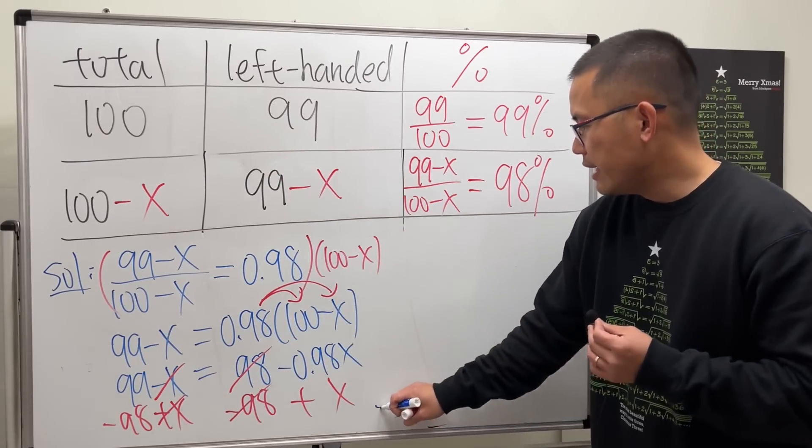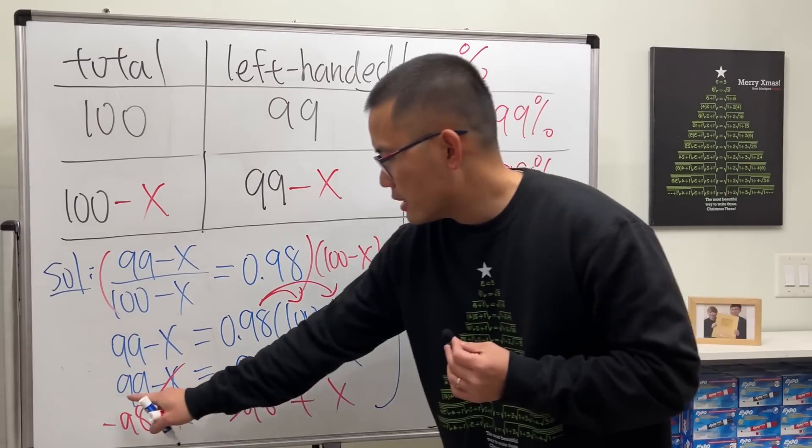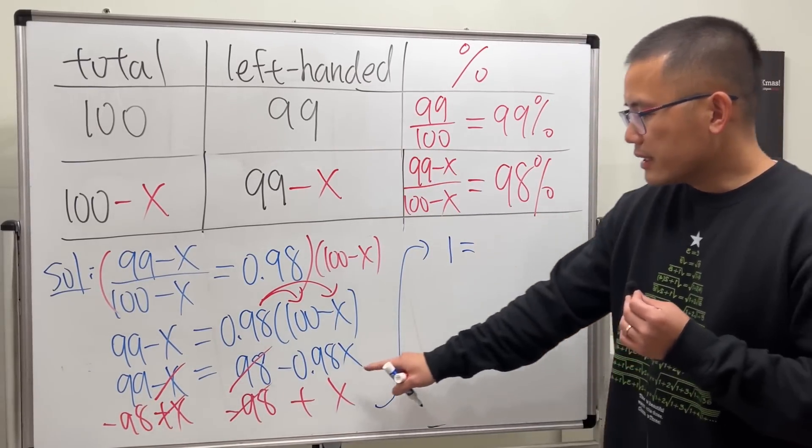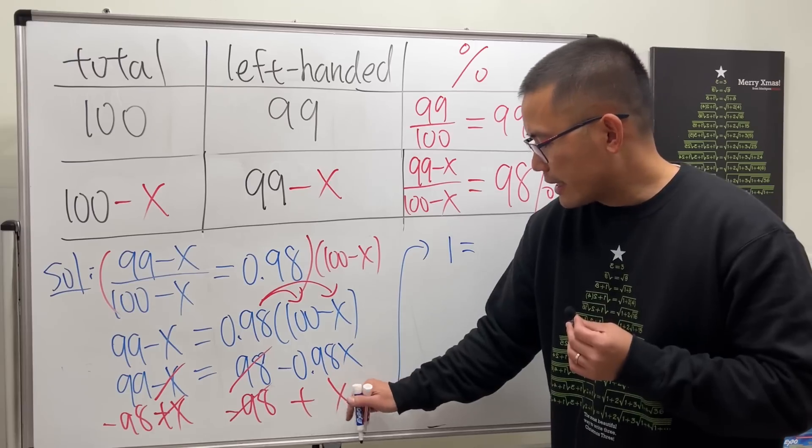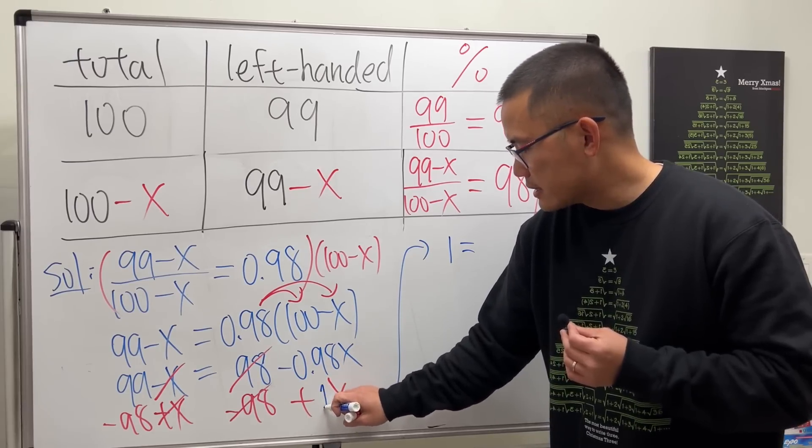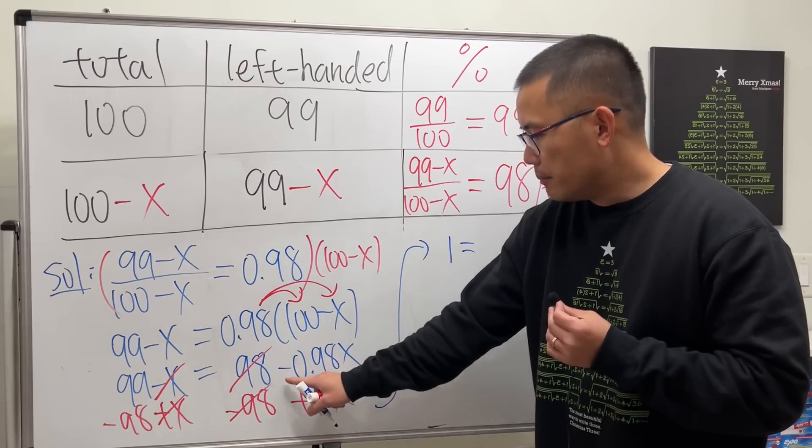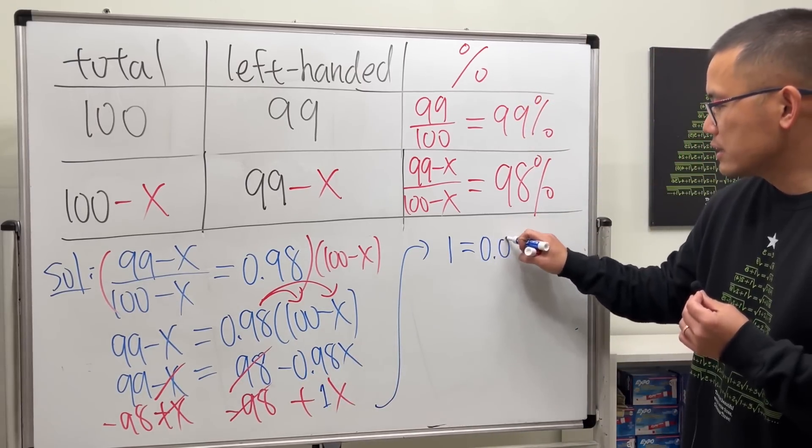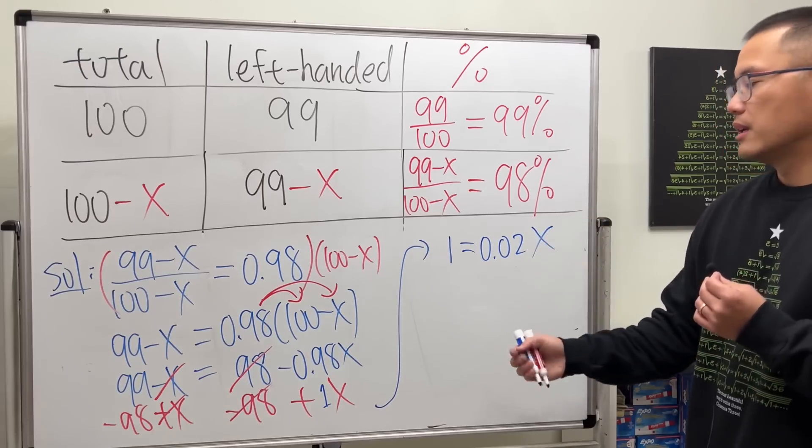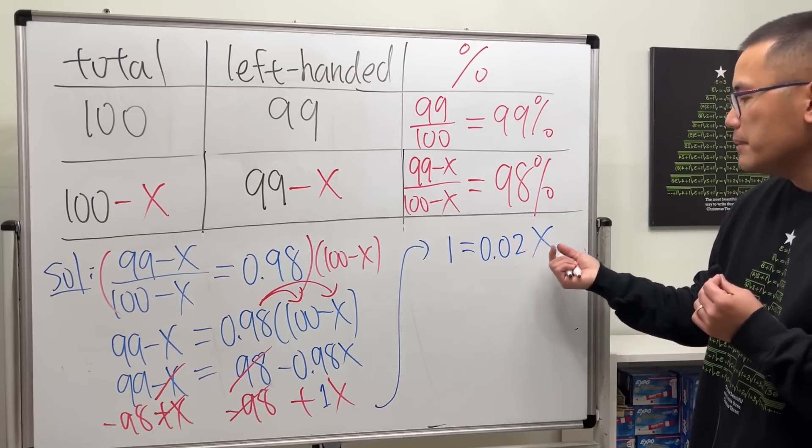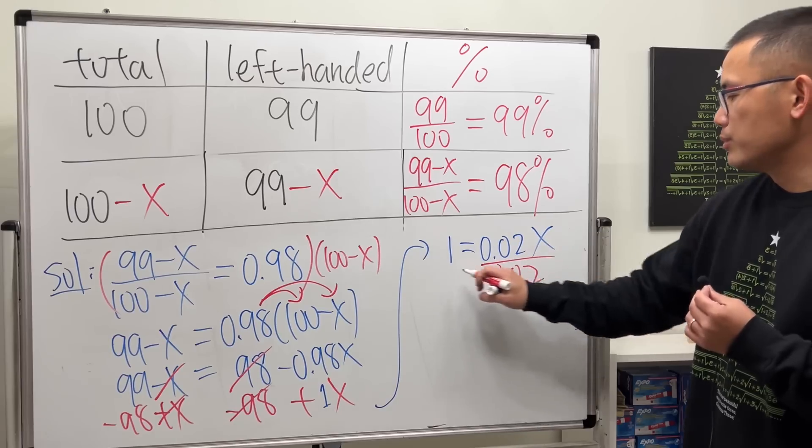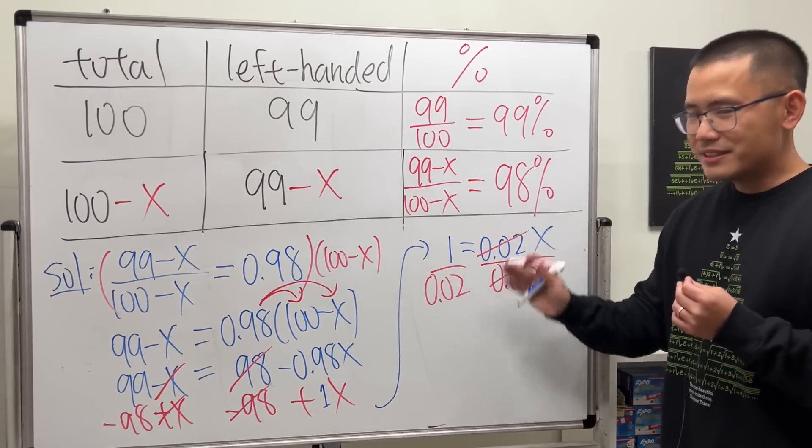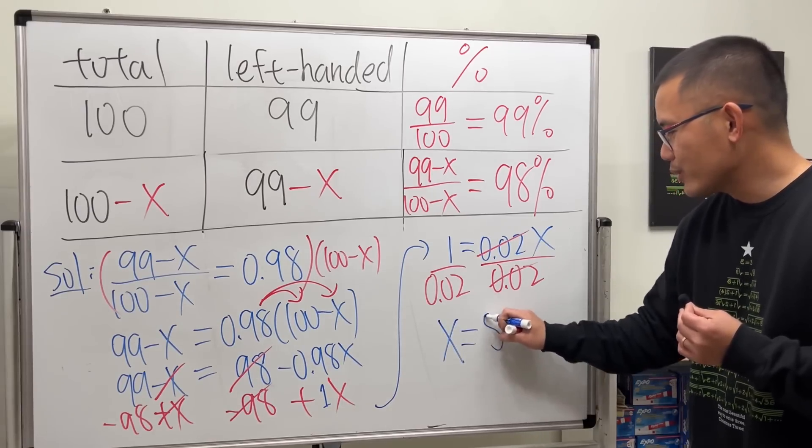Then subtract 98 from both sides so that this and that can cancel. We will get the left-hand side: 99 minus 98, which is just equal to 1. On the right-hand side, this is like 1x minus 0.98x, you will get 0.02x. And this means 0.02 times x, so we can divide 0.02 to both sides.